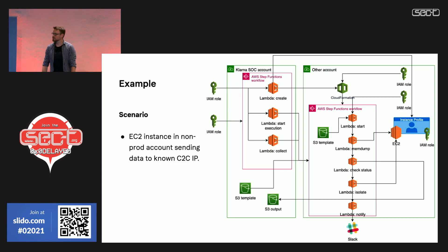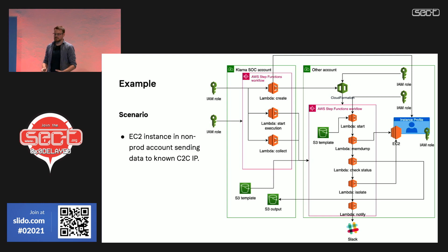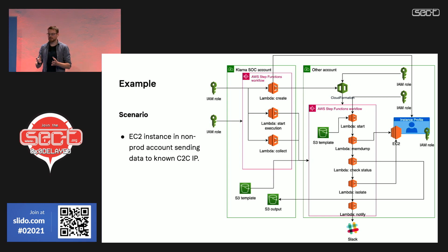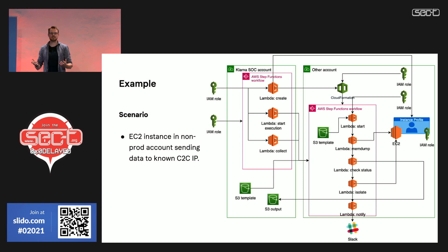What this looks like in the target account is that we're using these IAM roles and assuming the custom ones I mentioned, loading ourselves into those roles, and then using the templates from our own account, we start spinning up the resources we need. In the Step Function we can decide exactly what type of action to take using separate Lambda functions. We connect to the EC2 instance, check that it's ready and running, that it has an instance profile attached so we can connect to it using the SSM agent. Once we've verified EC2 status, we take a memory dump of the instance. We check the status, and once everything is complete, we isolate the instance, ship back all artifacts to our own account, and notify the SOC team in a Slack channel before deleting all resources again from the target account.